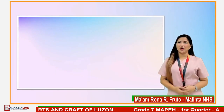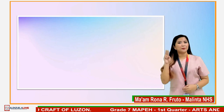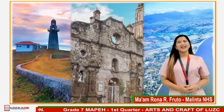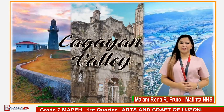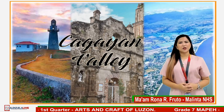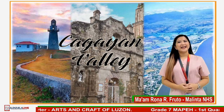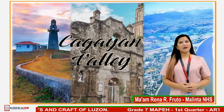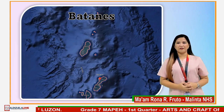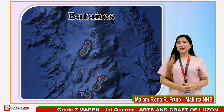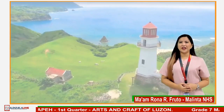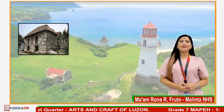We are done with lesson number one. Let's proceed to lesson number two: the arts and crafts of Cagayan Valley and Central Luzon. Starting with Cagayan Valley, where the Cagayan River, the longest river in the Philippines, is found. Cagayan Valley is composed of the provinces of Batanes, Cagayan, Isabela, Nueva Vizcaya, and Quirino. Batanes is the northernmost province in the Philippines. People living in the Batanes group of islands are called Ivatans. They are known for their unique architectural art: Ivatan houses.